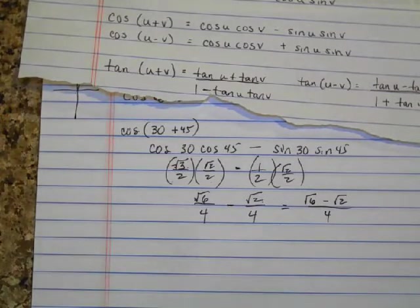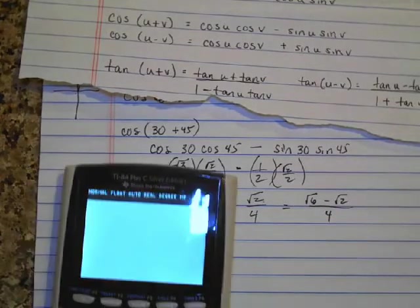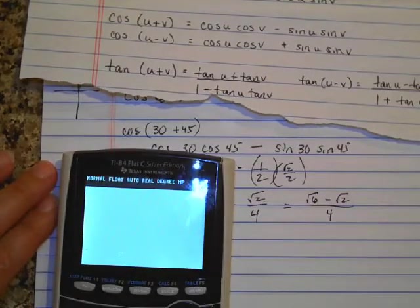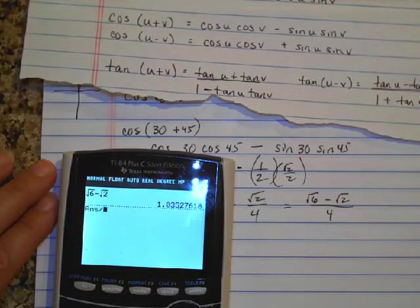I'm going to go ahead and punch that into the calculator just to kind of see what we've got here. We said this number should be a little bit bigger than 0. Let's see if it is. Square root of 6, subtract square root of 2, and then I want to divide that by 4.